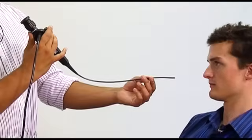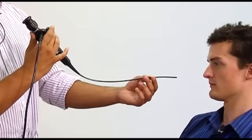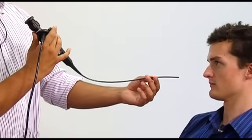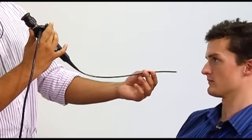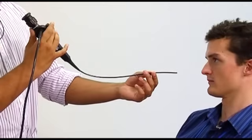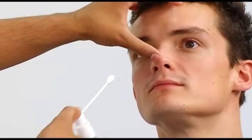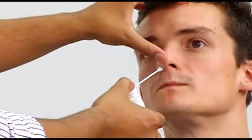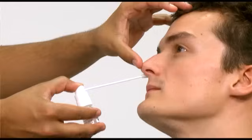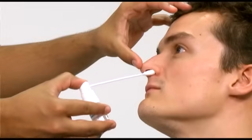A routine part of the ENT examination is the use of a flexible nasoendoscope to look at the internal aspect of the nose, the post-nasal space, and even as far back as the larynx. Before nasoendoscopy can take place, the nose must be anaesthetised with local anaesthetic spray in each nostril. This will take a few minutes to have an effect.